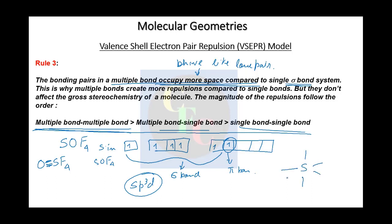Just as in SF4 we positioned the lone pair in the equatorial position, for SOF4 we position the double bond in the equatorial position as well, because it occupies more space and behaves similarly to a lone pair.